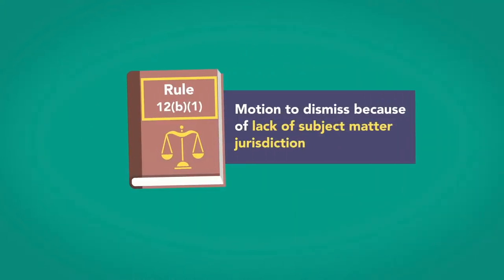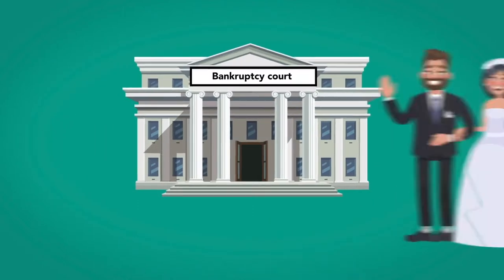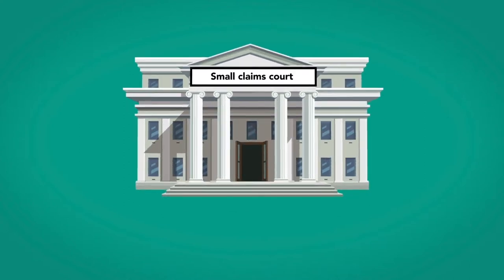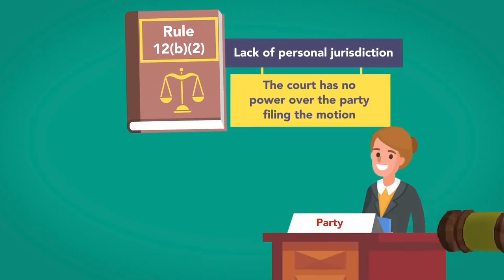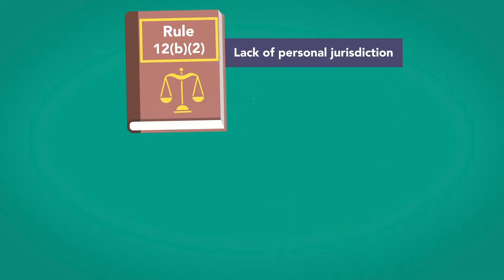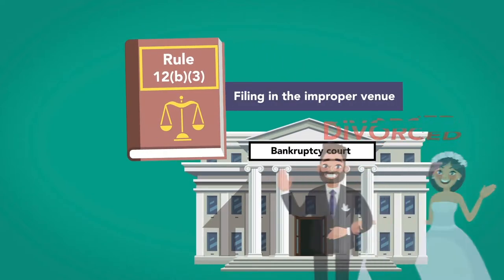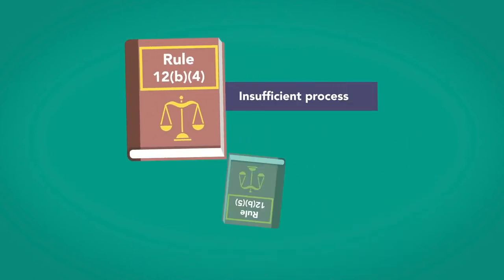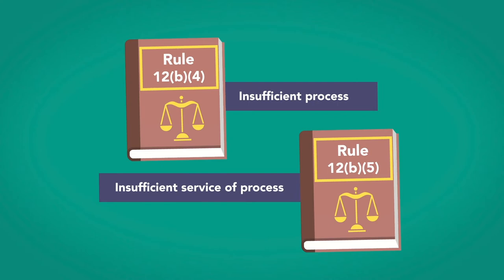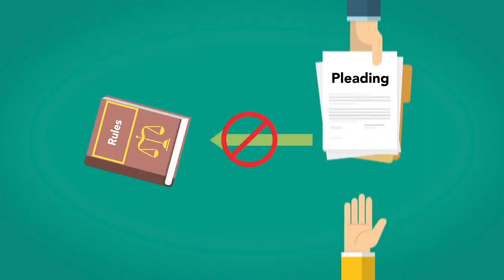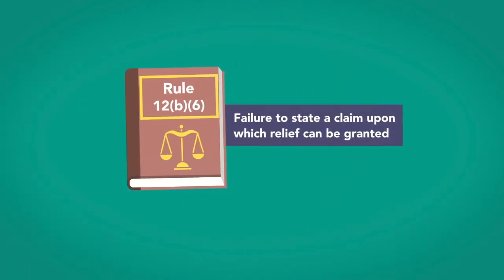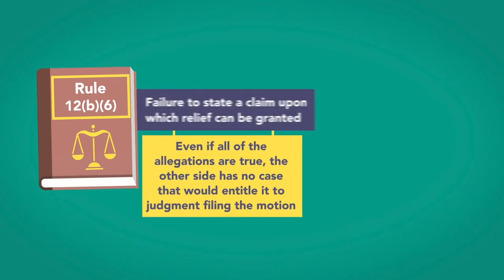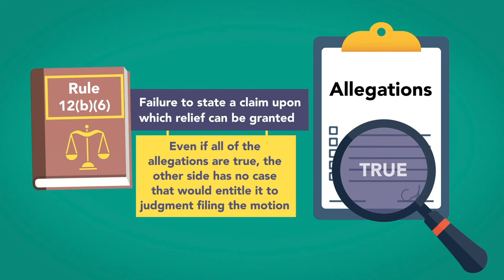Rule 12 motions include: Rule 12(b)(1), motion to dismiss because of lack of subject matter jurisdiction — this is filed when the case is in the wrong court, such as a divorce in a bankruptcy court or a million-dollar case in small claims. Rule 12(b)(2), lack of personal jurisdiction — this motion states that the court has no power over the party filing the motion. It's similar to filing in the improper venue, which is a 12(b)(3) motion. Rule 12(b)(4), insufficient process, and Rule 12(b)(5), insufficient service of process — these defenses state that either the pleading was not served on the party according to the rules, or that the pleading never got to the party. Rule 12(b)(6), failure to state a claim upon which relief can be granted — this catch-all defense argues that even if all the allegations are true, the other side has no case that would entitle it to a judgment.